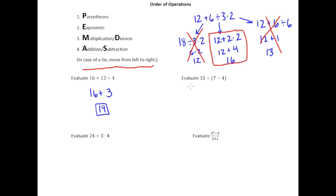Moving to the next example, we have a set of parentheses. We have division and subtraction, but because the subtraction is within parentheses it gets first priority. So I take care of what's inside the parentheses first, rewriting everything else. 15 and the division sign wait while 7 minus 4 gives 3. Then 15 divided by 3 is 5.